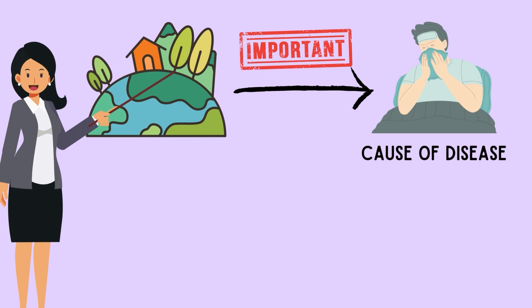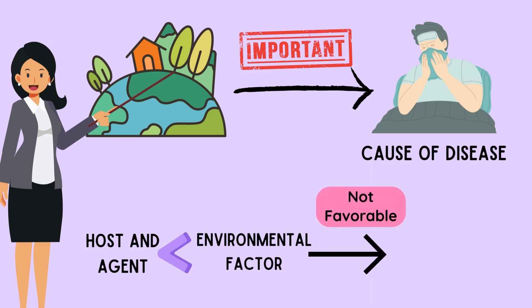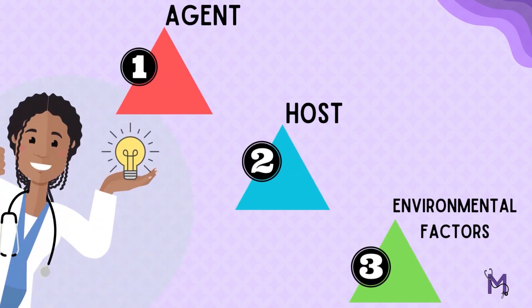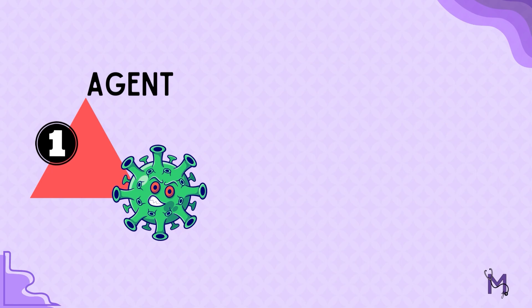Irrespective of the presence of an agent and host, until and unless the environment is favorable, there will be no occurrence of a disease. Now let's understand each constituent of this triad. First is the agent, which is the causative organism of a disease.